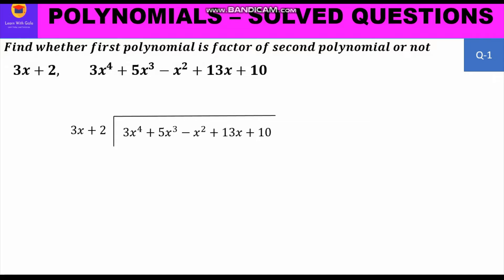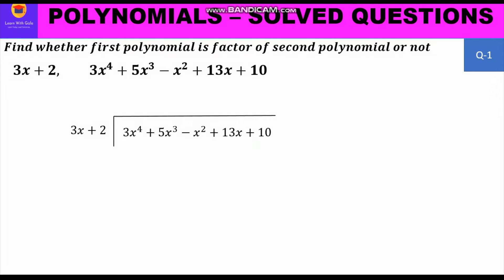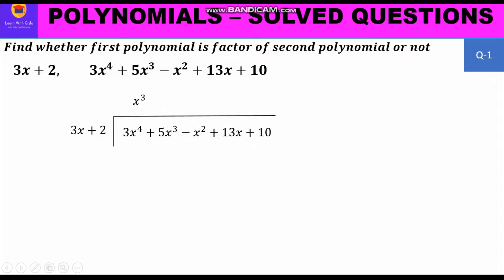The dividend is already in standard form, so we can proceed directly. For the first step of division, we take the first term of the dividend, 3x⁴, and divide it by the first term of the divisor, 3x, to get x³. Another way: what number multiplied by 3x gives 3x⁴? That is x³, because 3x × x³ = 3x⁴.